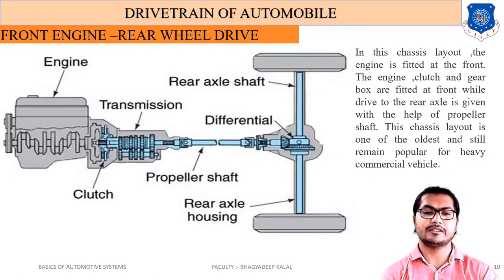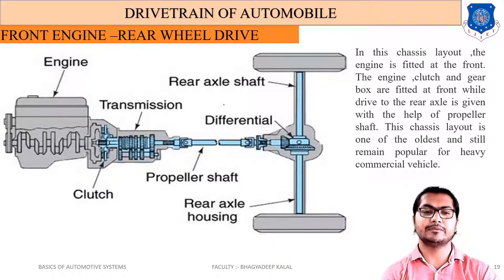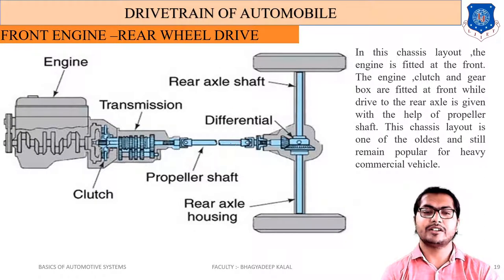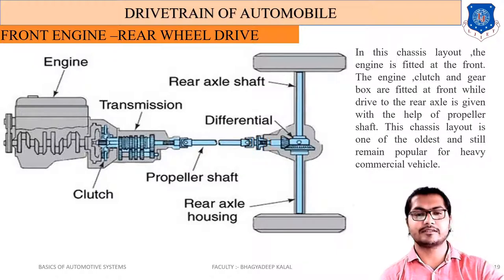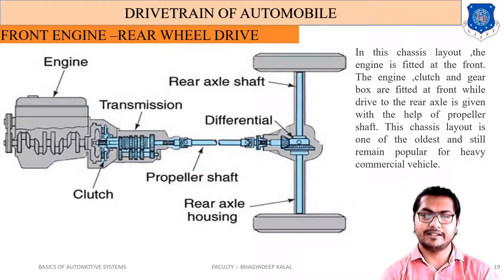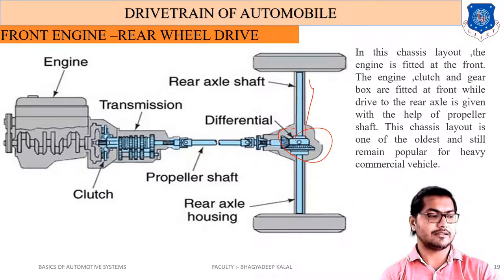The propeller shaft is a rotating shaft connected using two Hooke's joints or universal joints, which transmit power at an angle. The Hooke's joint is a type of coupling system studied in machine design. The differential then transmits power to the rear axle shaft and to the rear wheels.